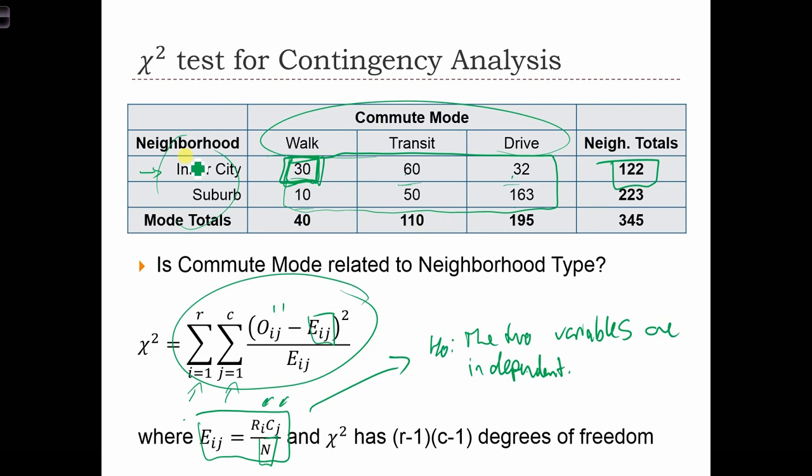and the function of c1, the total number of walkers. But there shouldn't be any relationship between neighborhood type and commute mode. And in order to embody that independence, we're going to use this formula for the expected value.